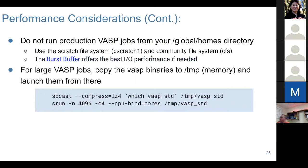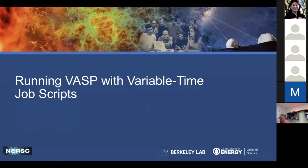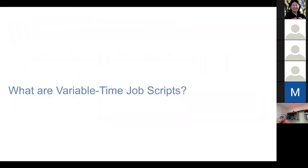We recommend running VASP from scratch or CFS file systems rather than global home directories, which have a small quota and are not performant for parallel jobs. For large jobs, use SBCAST to copy the binary into memory first, then run from memory — this shortens the startup time.